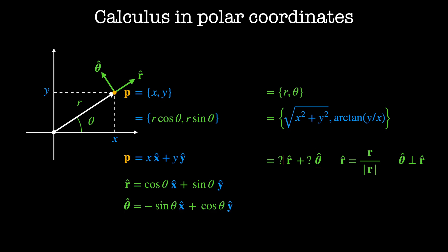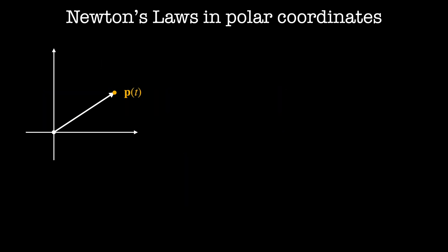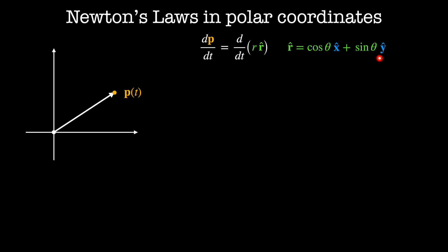From this, we can show that P has no component in the theta-hat direction, but measures distance r in the r-hat direction. So in polar coordinates, P is equal to r times r-hat. To do physics, we need to understand the trajectory that particles take, so we want to look at what happens to P as a function of time. The first derivative of P gives us the velocity of P — that is, the velocity of P is the time derivative of r times r-hat. Using the chain rule, we get r-dot times r-hat plus r times r-hat-dot.